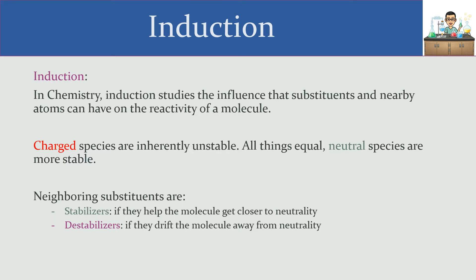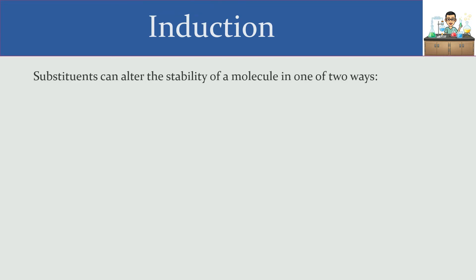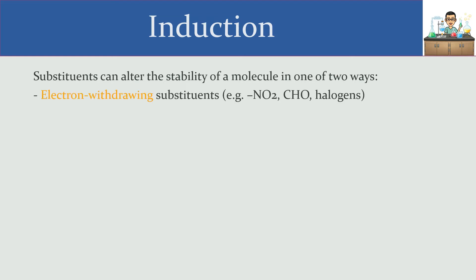What we want to take a look at is what kind of substituents we have, and as a result we can determine what kind of effect they're going to make on our molecule. The two ways in which we can alter the stability of a molecule involve two types of substituents: ones that we call electron withdrawing, and others that we call electron donating.